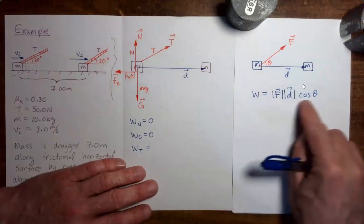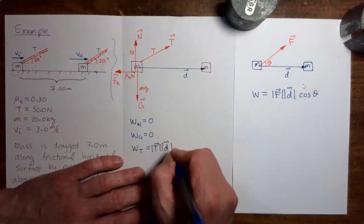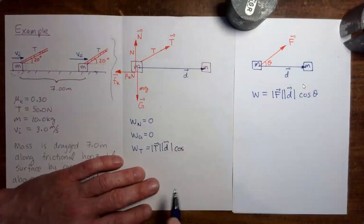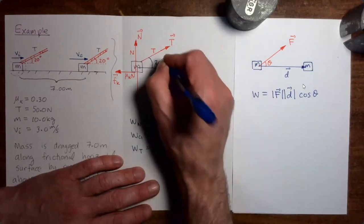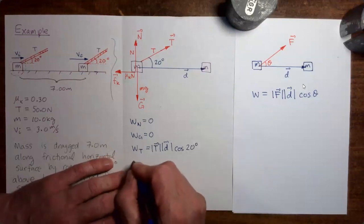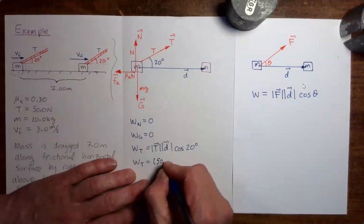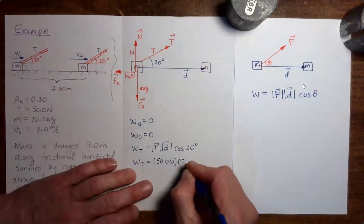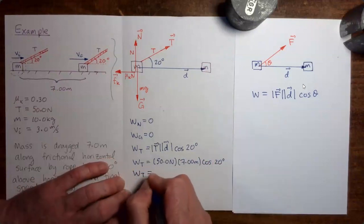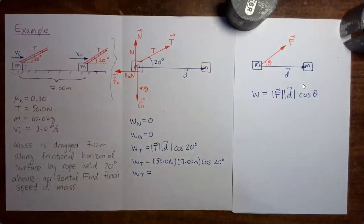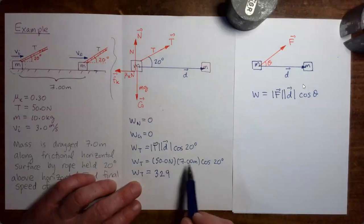So we're going to use this formula to calculate the work done by tension: magnitude of the tension force, magnitude of the displacement vector, cosine of the angle between the two. Referring to this picture, we can see that the angle between the tension force and the displacement is 20 degrees. Substituting the magnitudes: magnitude of tension force is 50 newtons, the displacement is 7 meters, and cosine 20. Substituting all of this into your calculator, you will get a numerical value of 329, and newton times meter is joules — so 329 joules.